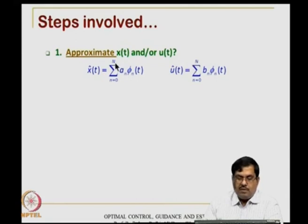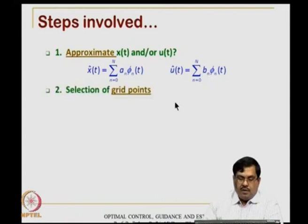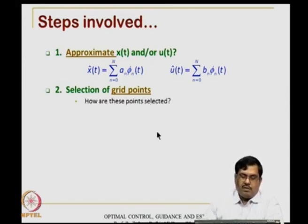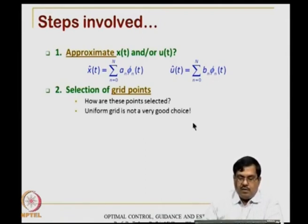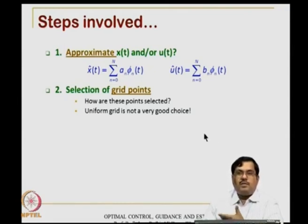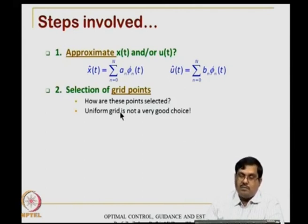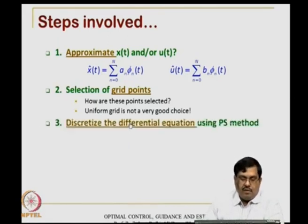Then you need to select a set of grid points. It turns out that a uniform grid point is not a very good choice. We need non-uniform grid points. The whole idea is how to represent the same problem with fewer grid points. Large numbers of grid points is not desirable. We want as few as possible, but we have to use non-uniform grid points — Gauss collocation points and similar — to do a good job with fewer points.